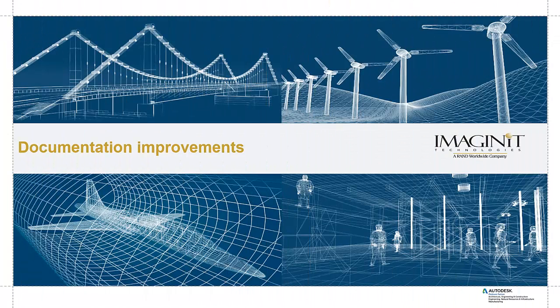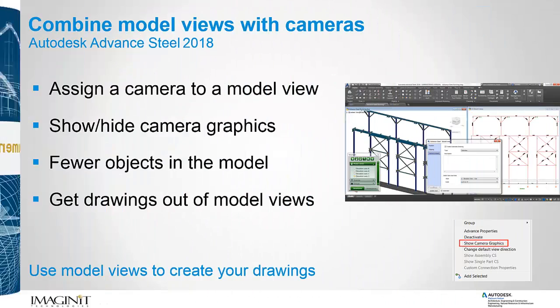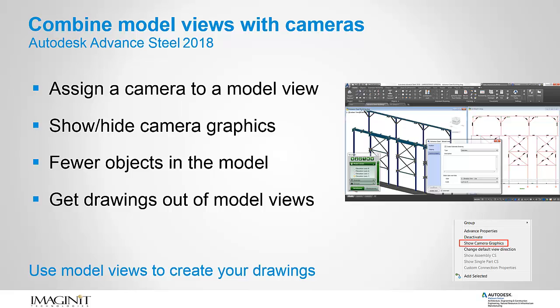Advanced Steel 2018 Documentation Improvements. Advanced Steel offers the possibility to create a model view from your 3D model so that you can isolate objects in a specific 3D volume. Advanced Steel 2018 now enables you to combine a model view with a camera and use it for drawing creation by assigning it a specific drawing style and scale.